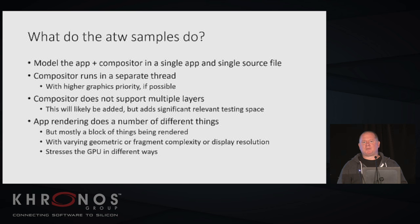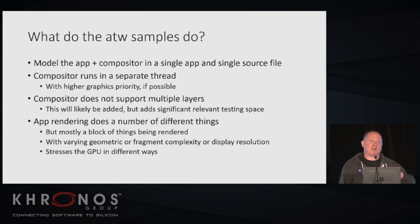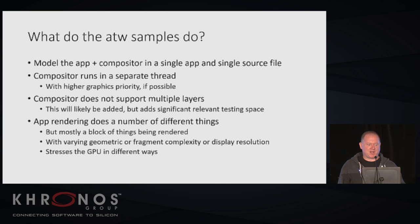That's maybe one of the most useful general things the ATW sample contributes, even though it was never really intended for that — it was just a maintenance simplifier. What the samples do is model the app plus compositor in a single application and a single source file, for every platform in that same file. It is a big giant piece of code with some ifdefs to keep you from executing Android stuff when you're on Windows. But the nice thing is if you're looking for the definition of a structure, you can just search in the same file and find it.